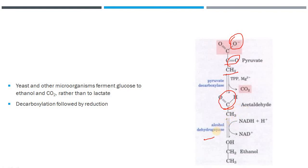Then the enzyme alcohol dehydrogenase catalyzes a reversible reaction in which acetaldehyde is converted to ethanol. The aldehyde group is reduced. So in microorganisms, the process is: decarboxylation of pyruvate to acetaldehyde, followed by reduction to ethanol.